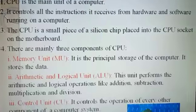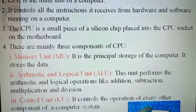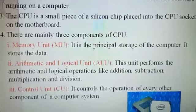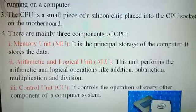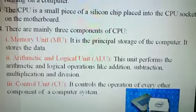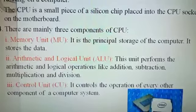There are mainly three components of CPU. First is Memory Unit, second is Arithmetic and Logic Unit, and third is Control Unit. The Memory Unit is the principal storage of a computer.